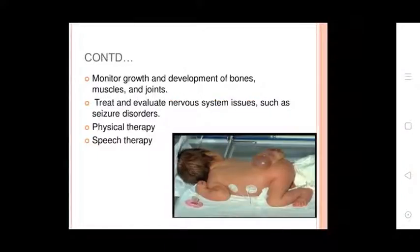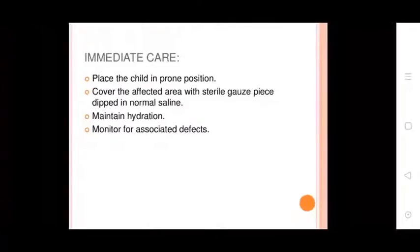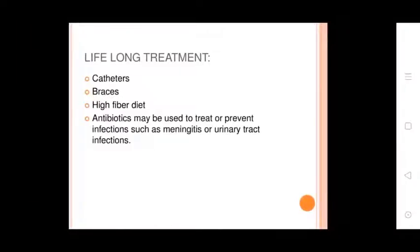Ongoing treatment includes monitoring growth and development of bones, muscles, and joints; treating nervous system issues such as seizures and disorders; physical therapy and speech therapy. Immediate care involves placing the child in a prone position, covering the affected area with sterile gauze dipped in normal saline, and maintaining hydration. Long-term treatment includes catheters, braces, high fiber diet, and antibiotics to prevent infections such as meningitis or urinary tract infections.